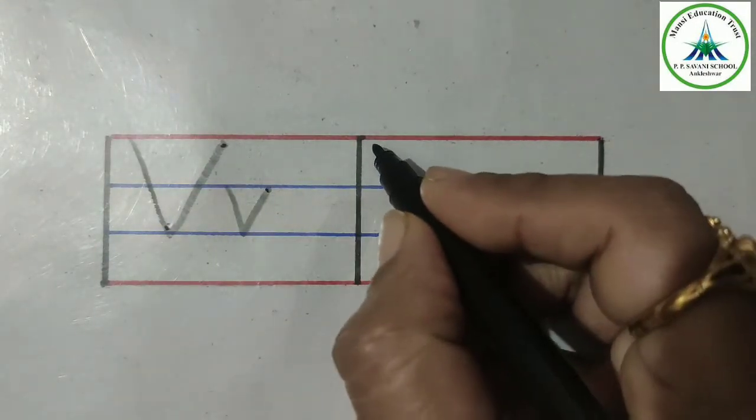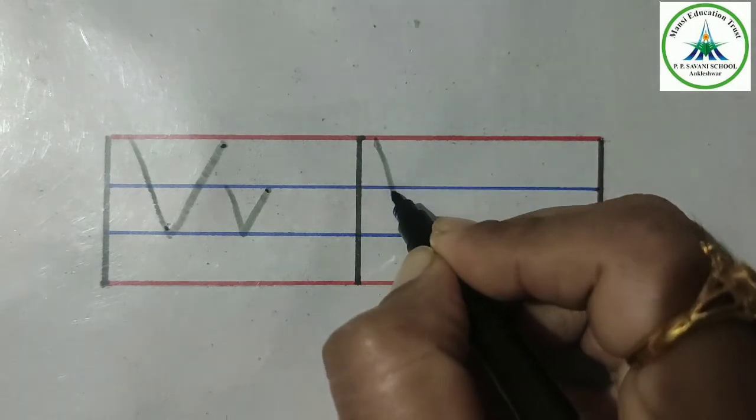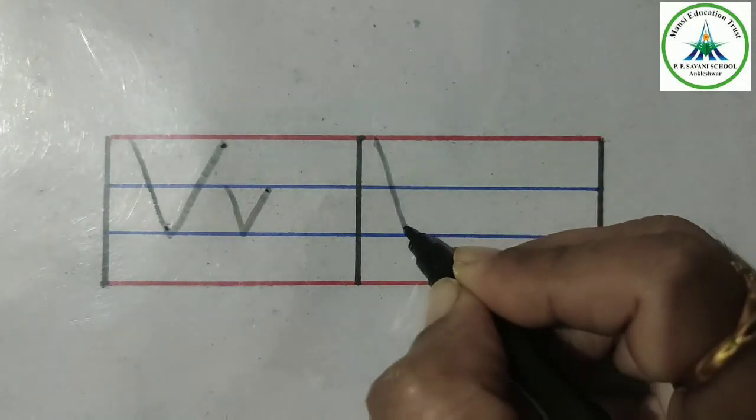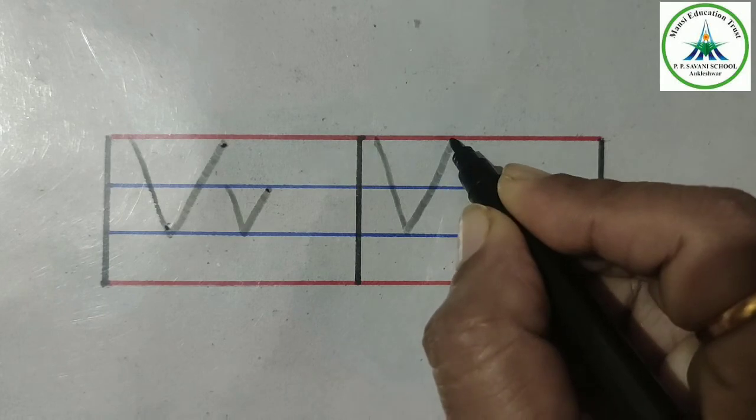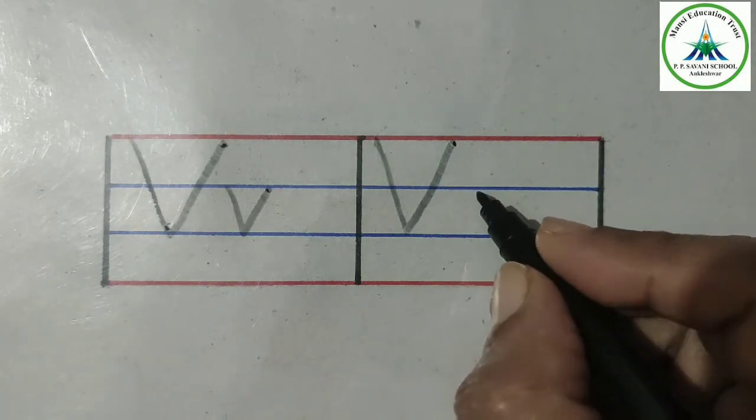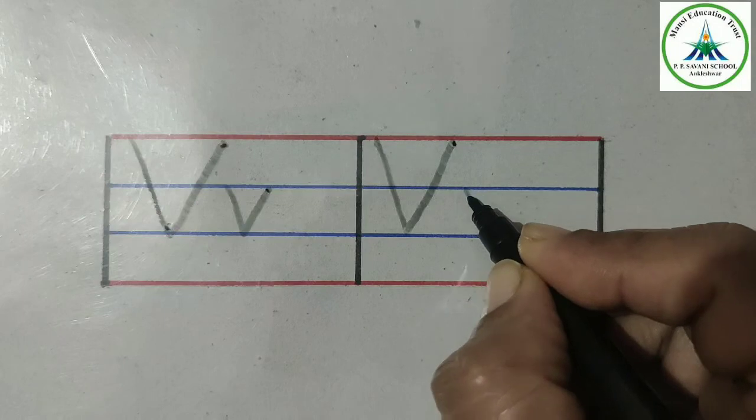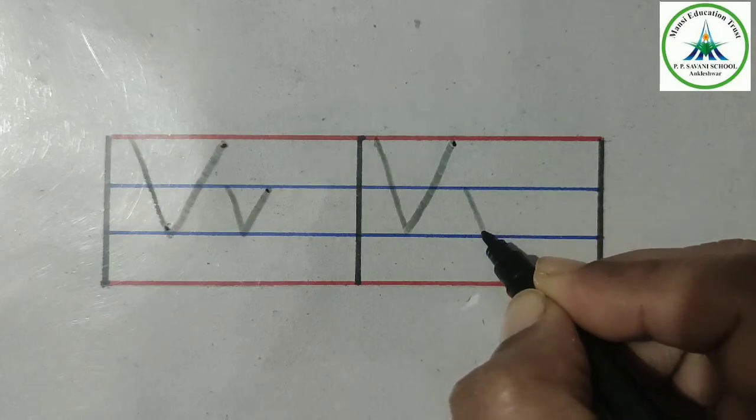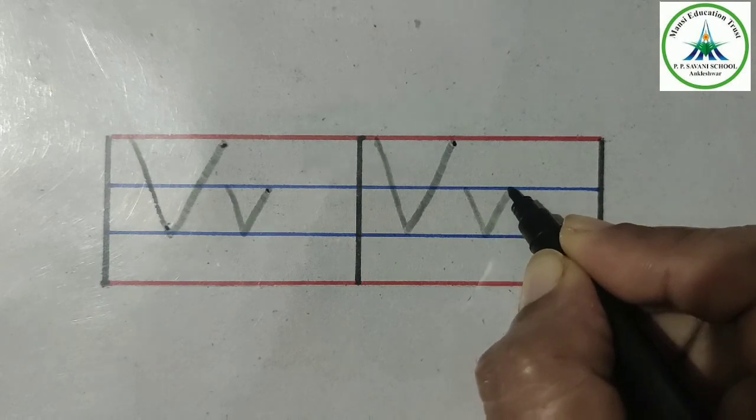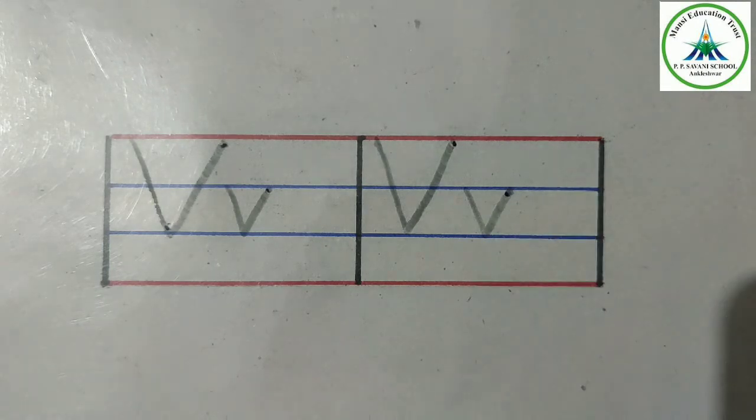Let's see again. This is capital letter V, a slanting line and opposite slanting line. Then to write small letter V, make a slanting line in between two middle lines and then opposite slanting line. This is small letter V. It's so easy.